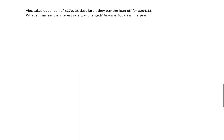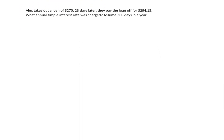Another problem. Alex takes out a loan of $270. Make sure there's a full stop there, that's a period, not a decimal place. 23 days later, Alex pays off the loan for $294.15. The question is, what is the annual simple interest rate that was charged? We're definitely going to be using the simple interest formula again. We know that initially there was a loan taken for $270. That's going to be the principal of our loan. Our interest rate we don't know, that's what we're trying to find.